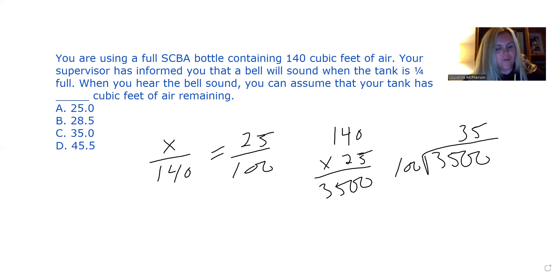So I put 25 over 100 to represent 25% over the 100% of the total tank. On the other side of the equation, I put x over 140, because we know that 140 cubic feet of air is the maximum amount of air, the total amount we can put into our tank. So I line that up with the total percentage of 100, and then from there we can do the math.